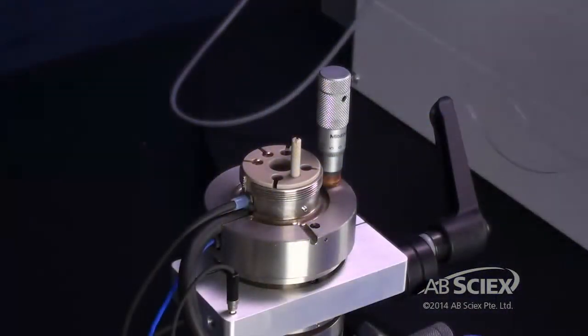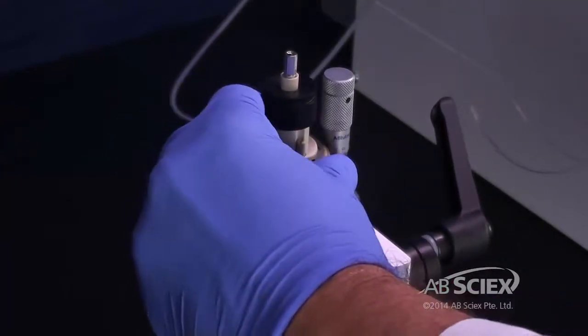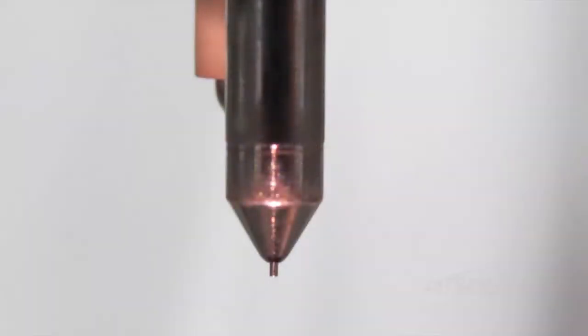Reinstall the probe and tighten the bronze retaining ring. Tighten the black electrode until 0.5 to 1 mm of the electrode tip protrudes from the probe.